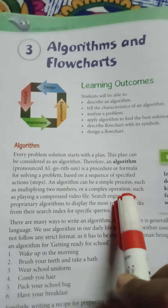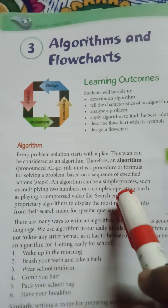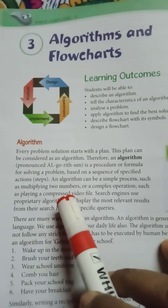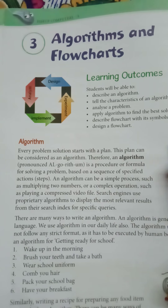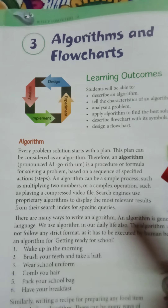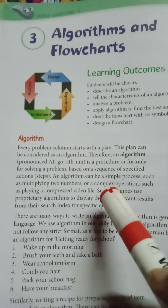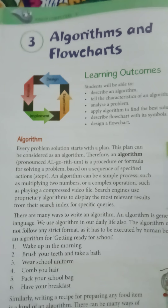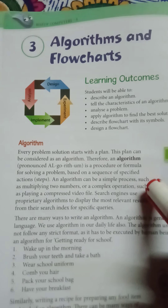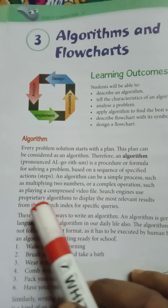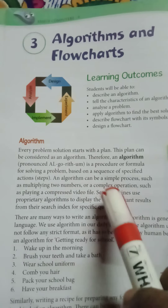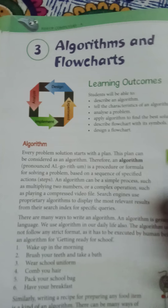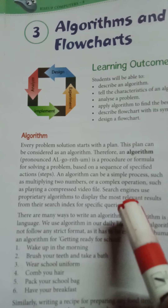An algorithm is a simple process — साधारण प्रक्रिया, such as multiplying two numbers — जैसे कि हम दो numbers को step by step multiply कर सकते हैं। Or a complex operation — मिश्रित operation, such as playing a compressed video file — जैसे कि हम किसी compressed यानि थोड़ी छोटी video को play करते हैं।